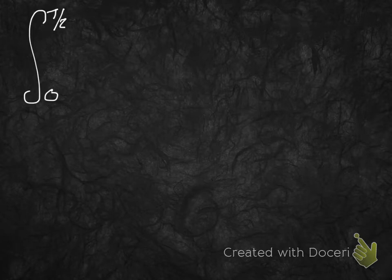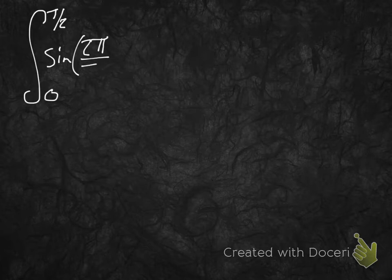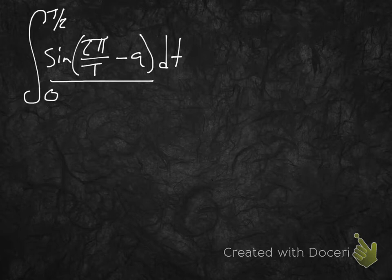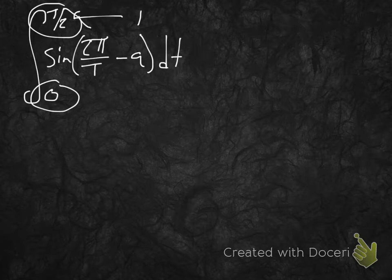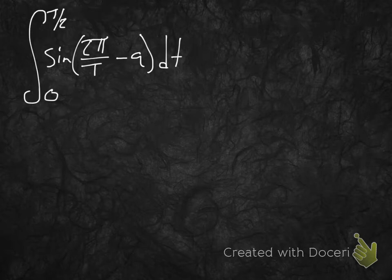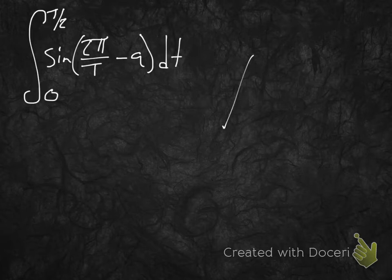Let's evaluate the definite integral over the interval 0 to T/2 — a rational expression as the upper limit of integration — of sine of (2π/T · t − a) dt. This means we're integrating the function sine(2π/T · t − a) over the limits 0 and T/2. The upper limit T/2 is itself a rational expression, which has implications we'll discuss. We're integrating with respect to the variable t (lowercase), while the capital T is treated as a constant.